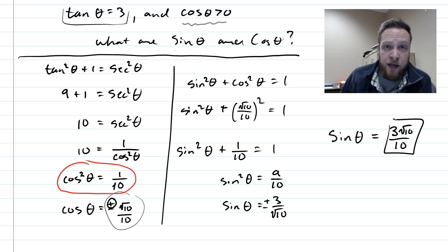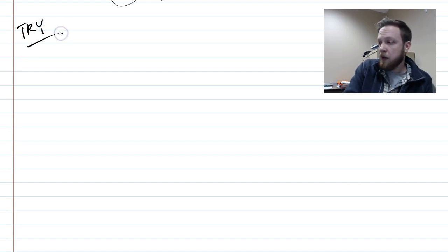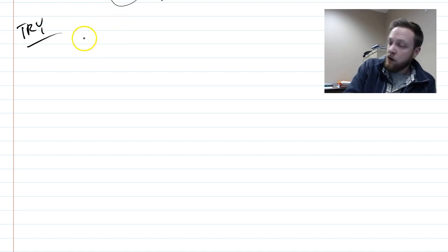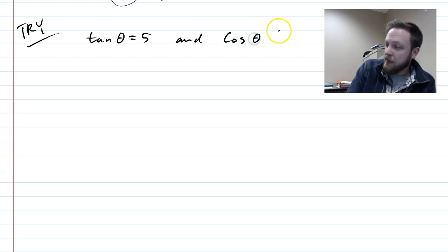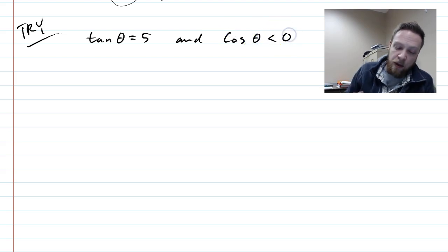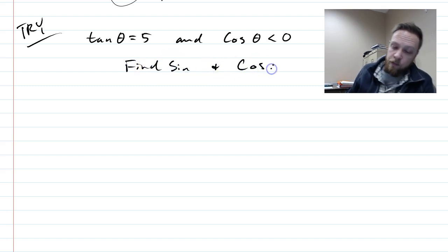Instead of drawing a triangle, we can just use these identities. Now I'll give you one to try on your own — a practice problem. Find sine and cosine if tangent of theta equals five and cosine of theta is less than zero. Pause the video and try it out.